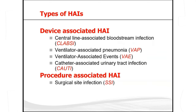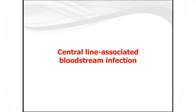The types of device-associated infections are CLABSI, VAP, VAE, and CAUTI — all requiring a device inserted in the body. Another group is called procedure-associated HAI, which is represented only by SSI, or surgical site infection. We will go through each one quickly to get an overview of these HAIs.